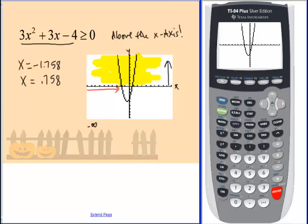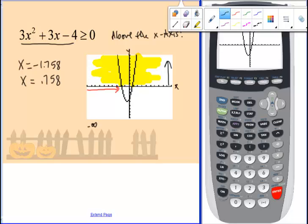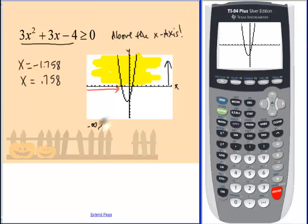It's above the x-axis from negative infinity all the way down to this point right here. Well, what point is that? That's the first intercept we found, which is negative 1.758. So there's one place that it's greater than zero.